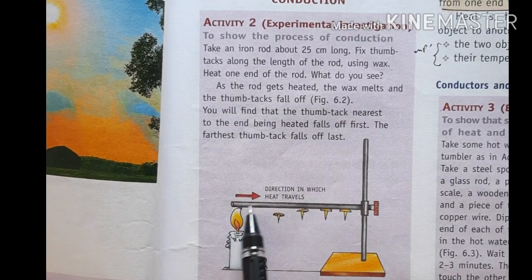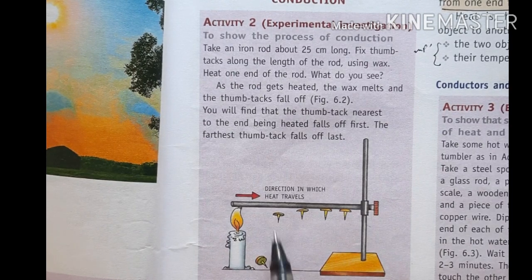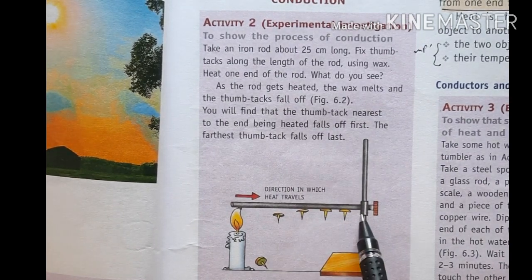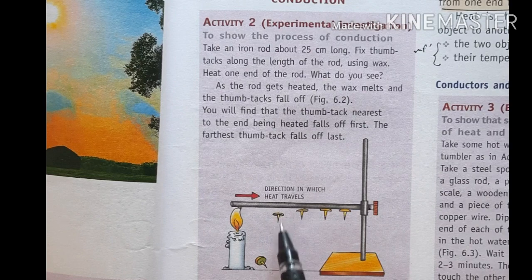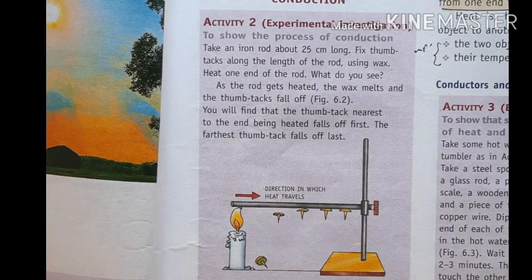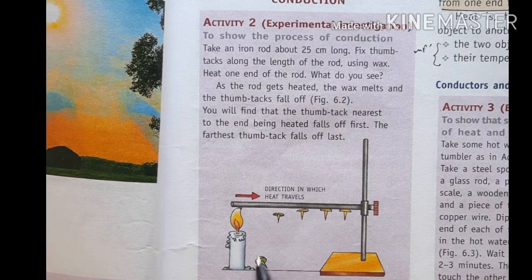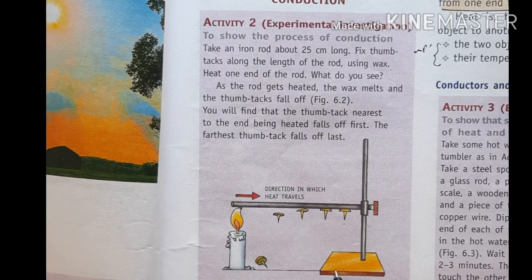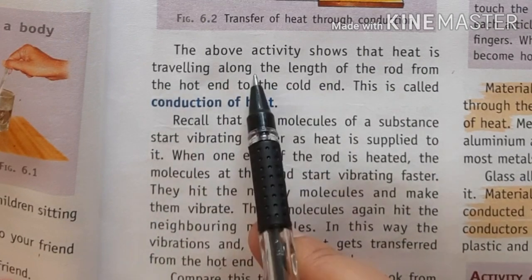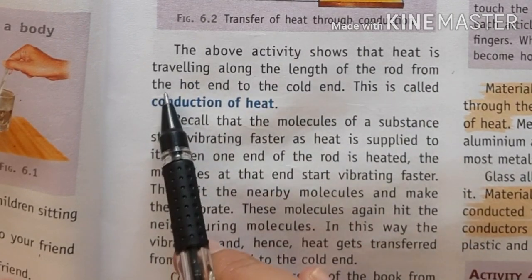As the rod warms up, the first thumbtack near the heated end falls down first, then the next one, then the ones further along. The thumbtacks fall off in sequence from the heated end toward the cold end.